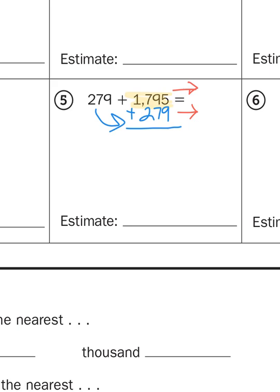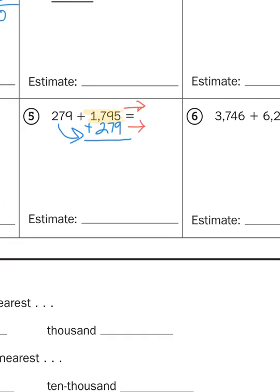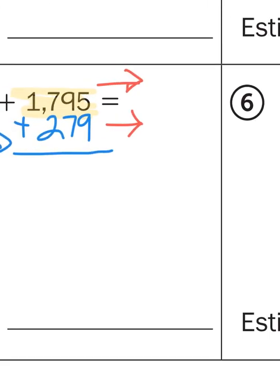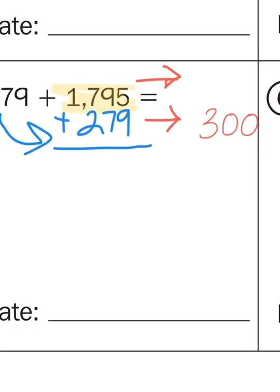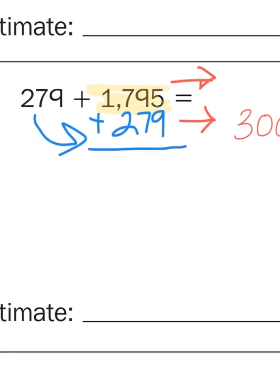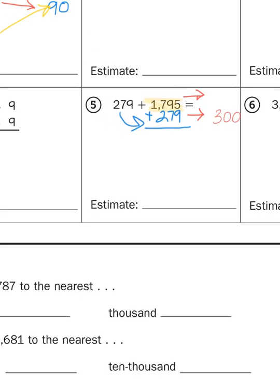So 279 rounds up to 300. That's one I can do in my head. But 1,795. How would I round that to the nearest hundred?